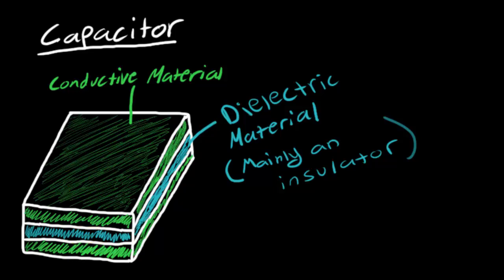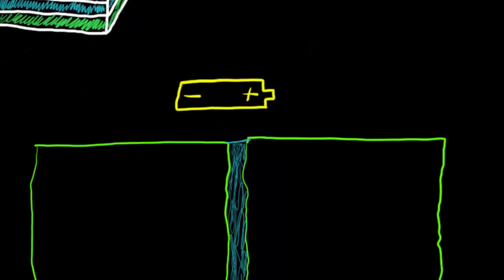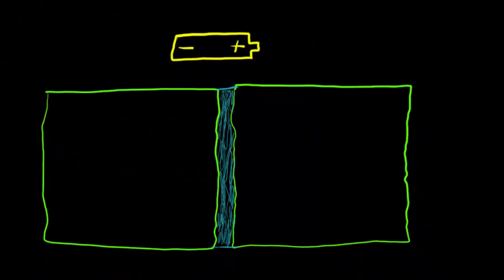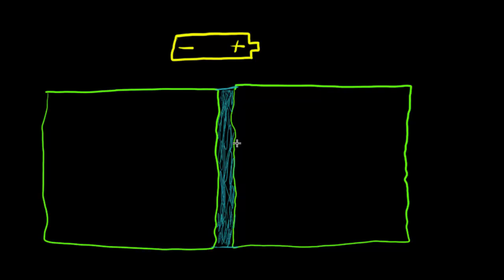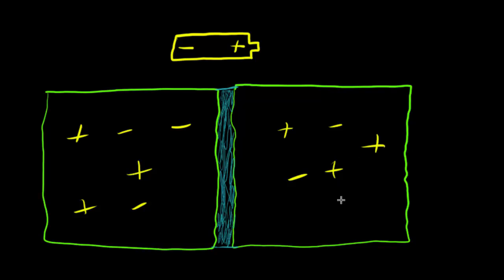Let's look at what happens when we connect this to a battery. Here is a side view of the two conductive plates — think of them as flat up against each other, separated by a tiny sliver of dielectric material. Without any battery power, these plates have some positive and negative charges, probably roughly the same amount on both plates.